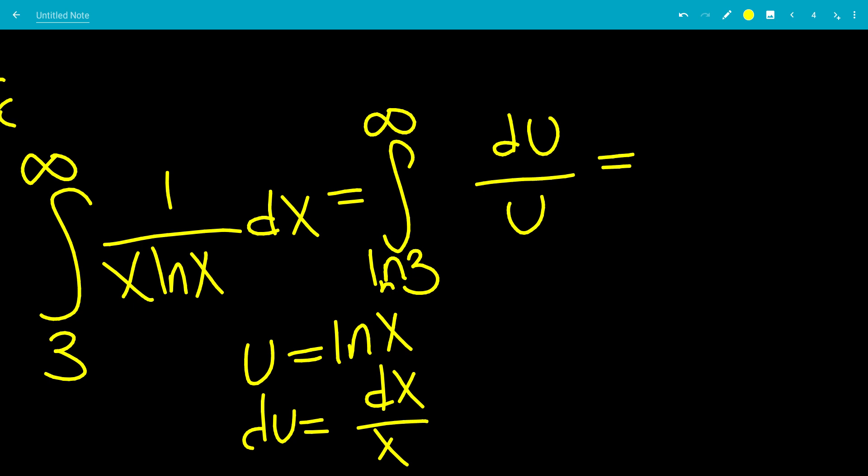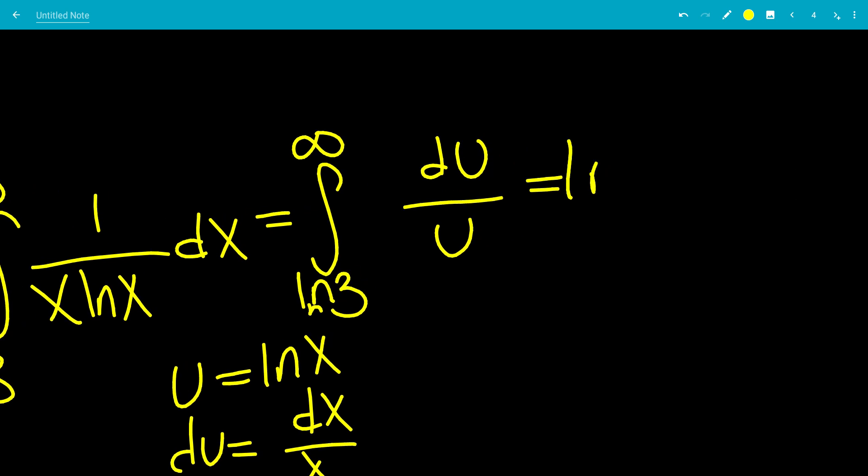We know what 1 over u, the integral of that is. That's ln absolute value. But we don't need absolute value in this case because it's positive. ln of u from u equals ln 3 to u equals infinity.